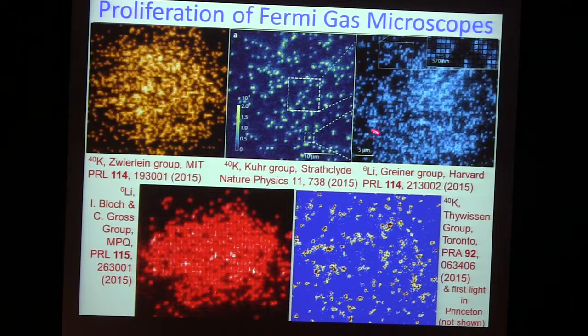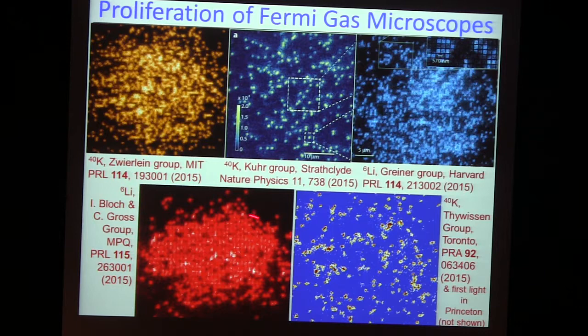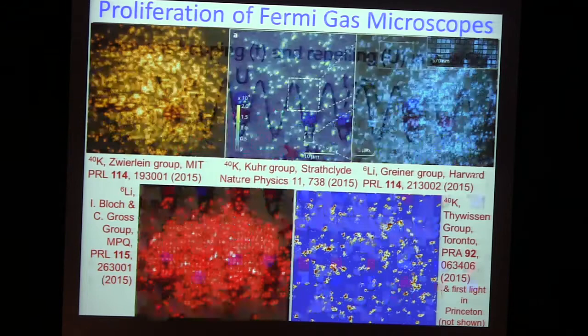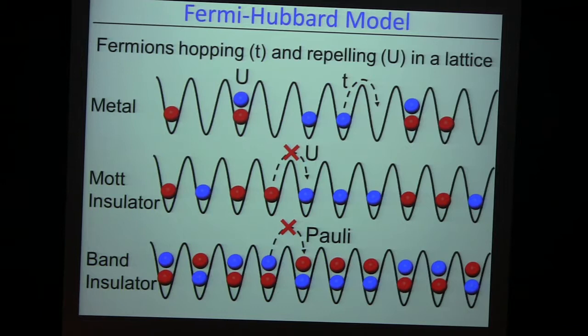Over the last year there has been a proliferation of these microscopes with all these beautiful groups. The Bloch group realized a very dense packing, which was immediately telling them that they had fermions which were avoiding each other — forming a band insulator in this optical lattice. This was a single spin state of fermions, and they could not sit on top of each other due to the Pauli principle. That gives you this beautiful dense flat packing.